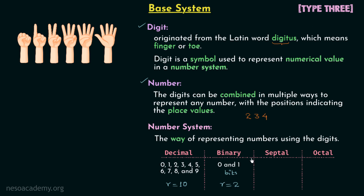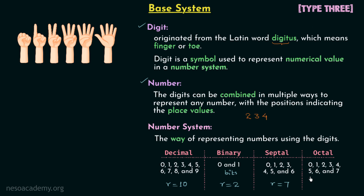Let us now talk about the septal number system. Septal has seven different symbols or digits: 0, 1, 2, 3, 4, 5, and 6. So the base or radix is equal to 7. Now, the octal number system has eight different digits: 0, 1, 2, 3, 4, 5, 6, and 7. So the base or radix is equal to 8 in the octal number system.